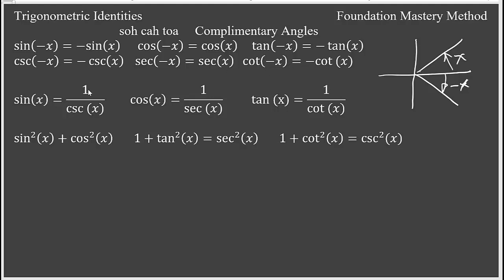Now for the reciprocal relations: sine x is 1 over cosecant x, so cosecant x is 1 over sine x. Cosine x is 1 over secant x and secant x is 1 over cosine x. Tangent x is 1 over cotangent x, and cotangent x is 1 over tangent x. Also, tangent x equals sine x over cosine x, and cotangent x equals cosine x over sine x.